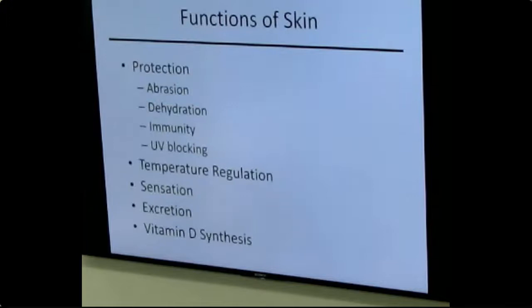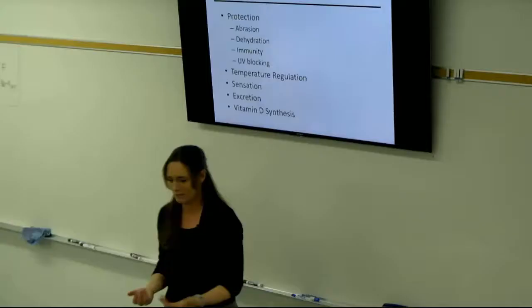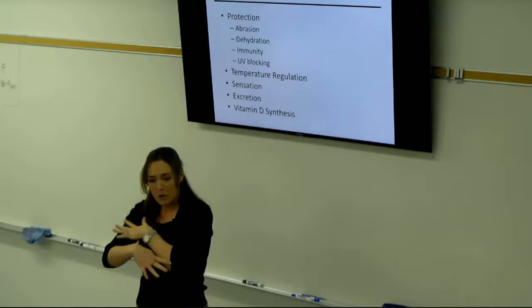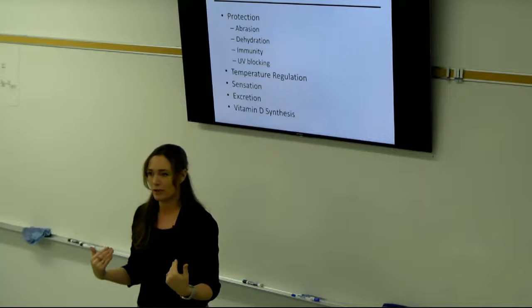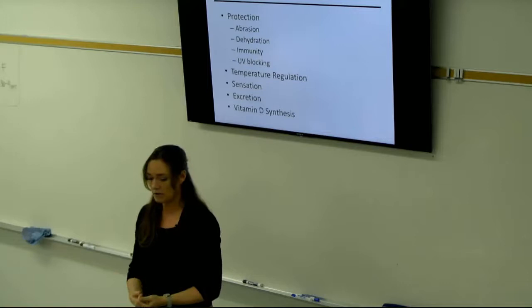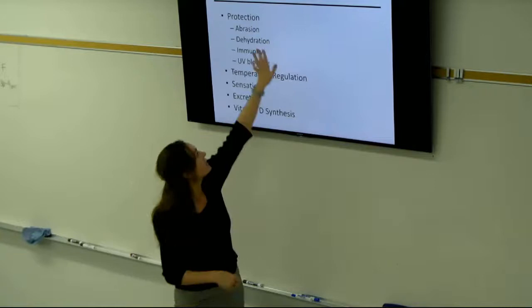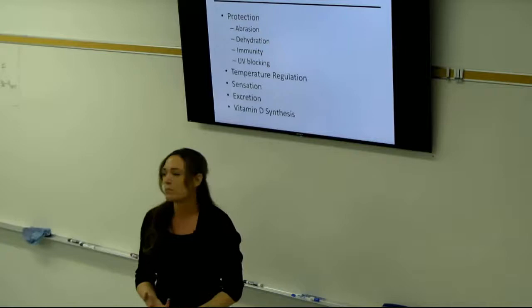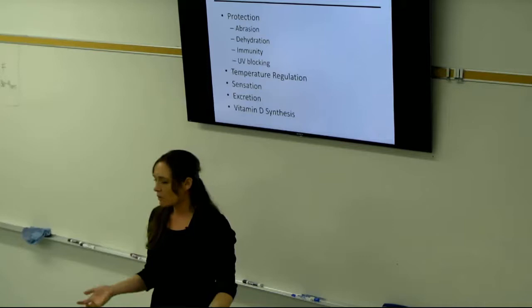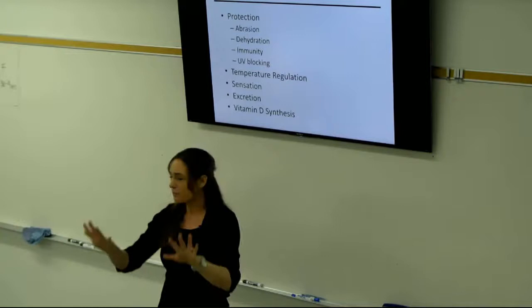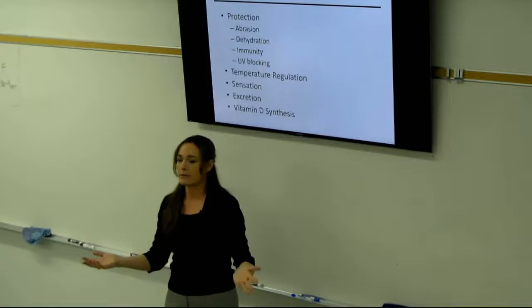The role of skin is primarily protection — from abrasion, which is why we have stratified squamous epithelium even down the esophagus. It also protects against dehydration: we have a waterproof barrier on the epidermis that prevents too much water from leaving our body. Immunity is another major function. UV blocking is also critical — the skin prevents harmful UV rays from damaging our body.